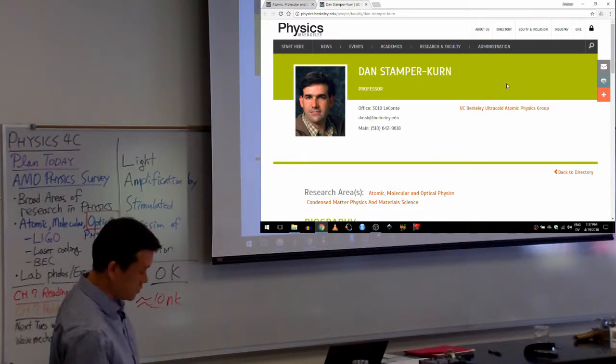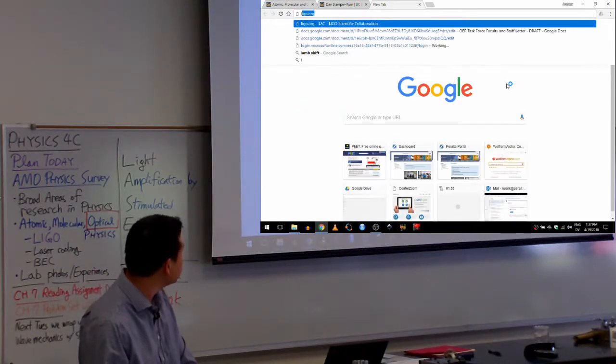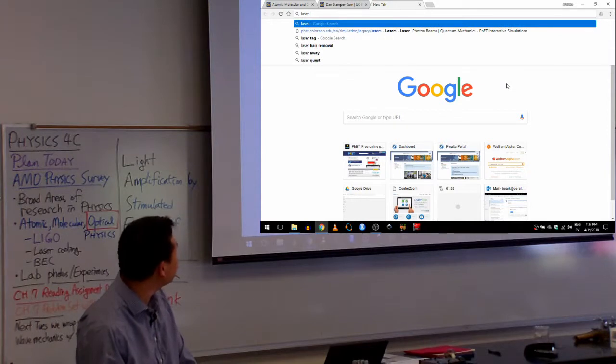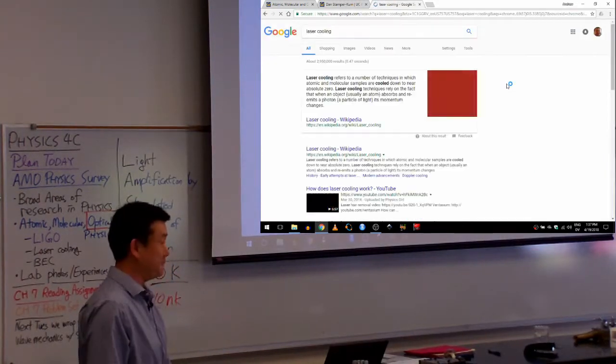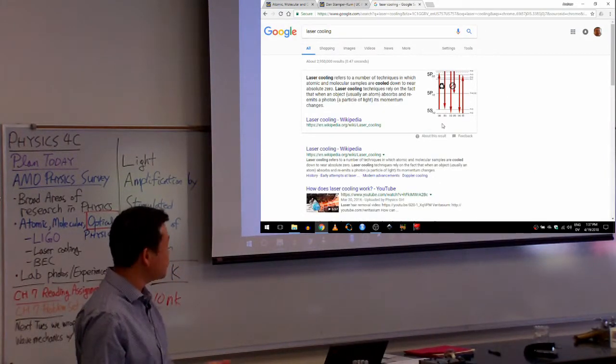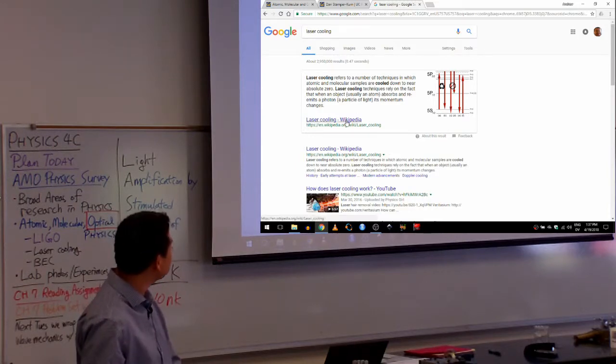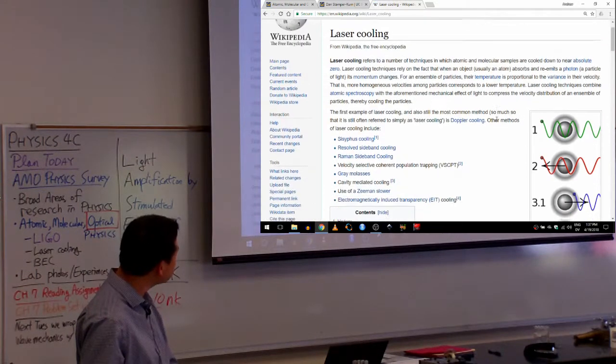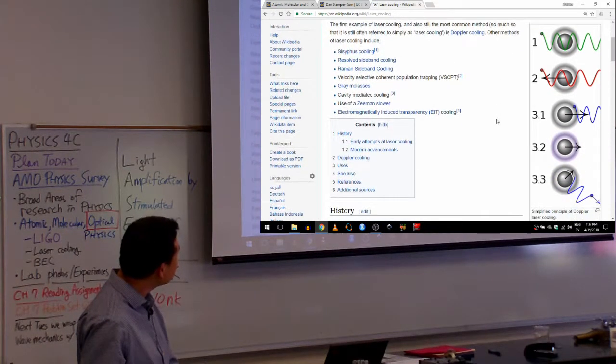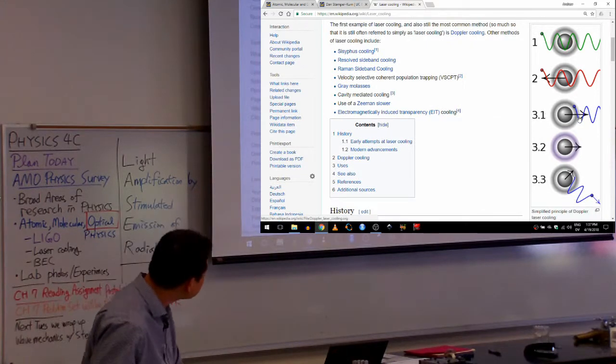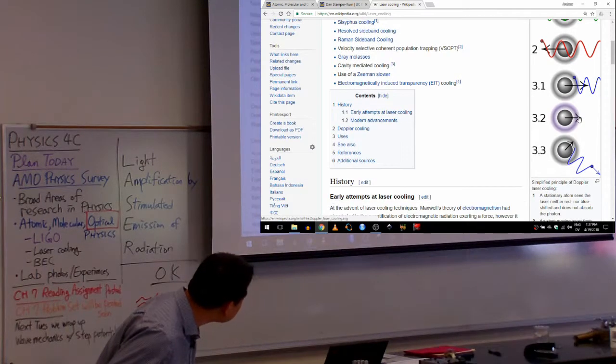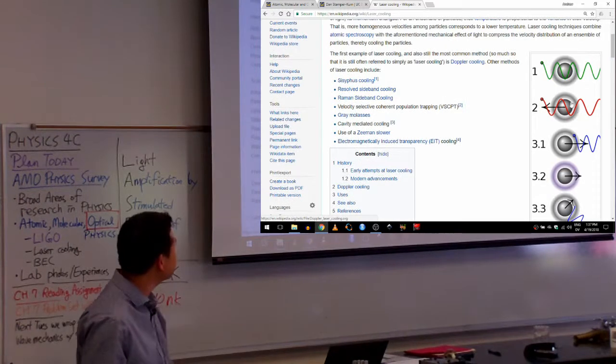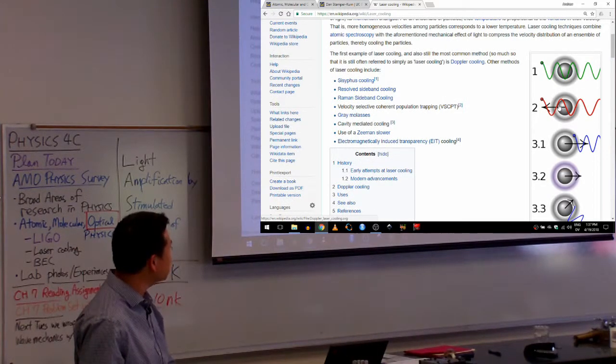This temperature is achievable only with methods of AMO physics. And that method is called laser cooling. And this is where you are cooling literally one atom at a time using light pressure. The Wikipedia article has pretty good pictures, so I'll just use this. So, imagine this is an atom.